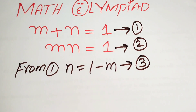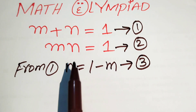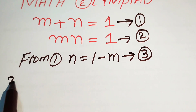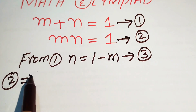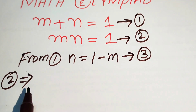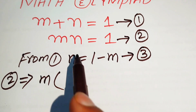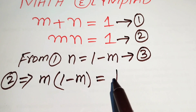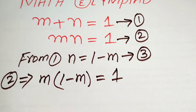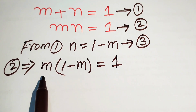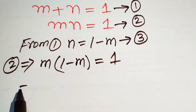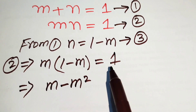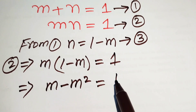In the next step, we substitute the value of n into equation number 2. So equation number 2 becomes m times n, and the value of n is 1 minus m, so we have m times (1 minus m) equals to 1. Multiplying m on both terms gives us m minus m squared equals to 1.